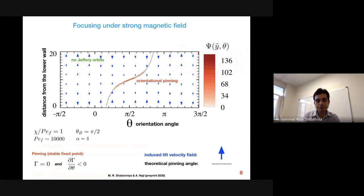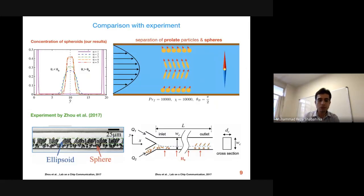For a strong enough magnetic field — represented by the ratio of magnetic torque to the dimensionless flow Péclet number — in the case of a transverse magnetic field, prolate spheroids are focused by the lift velocity, shown by the blue arrows, in the middle of the channel and on the channel centerline around the pinning curve, which represents the stable fixed points in orientational space — i.e., the pinning orientations. This causes prolate particles of different aspect ratios to be focused around the channel centerline with different levels of spread in the transverse magnetic field.